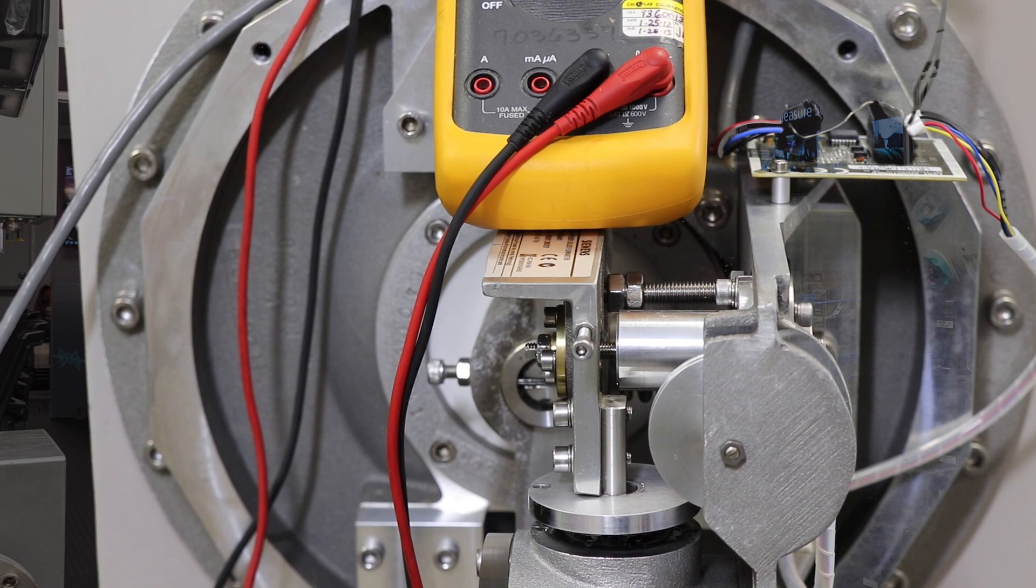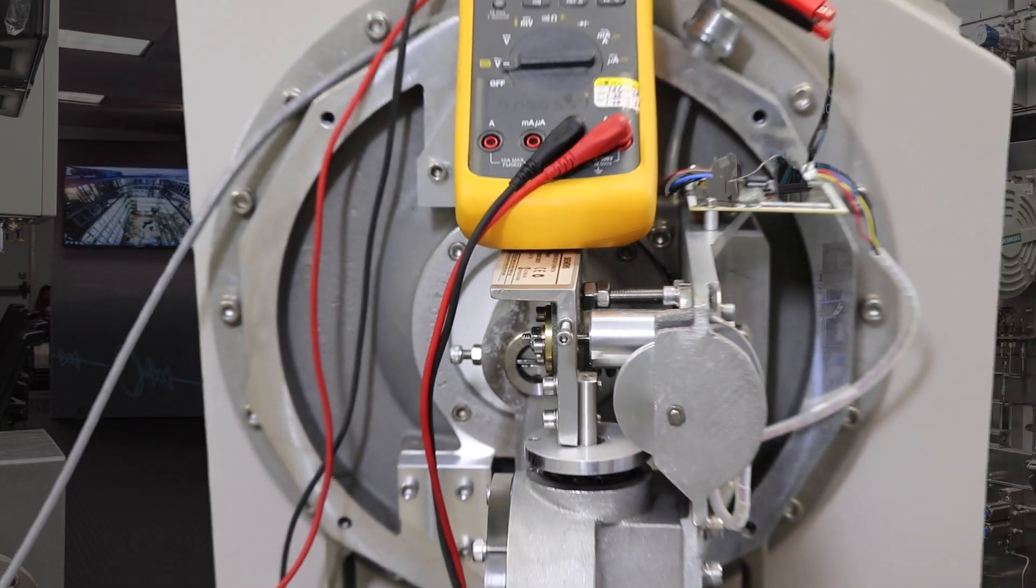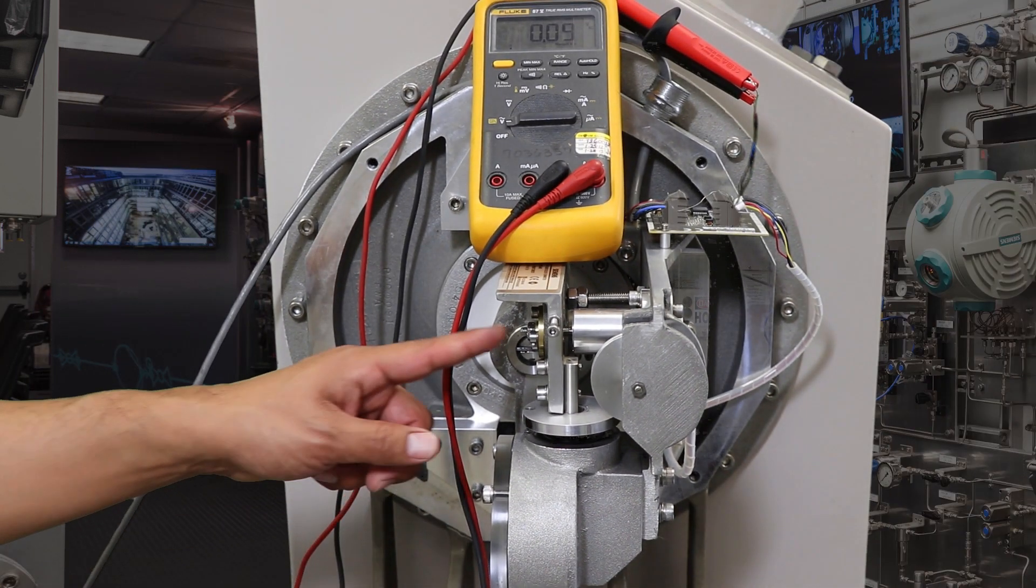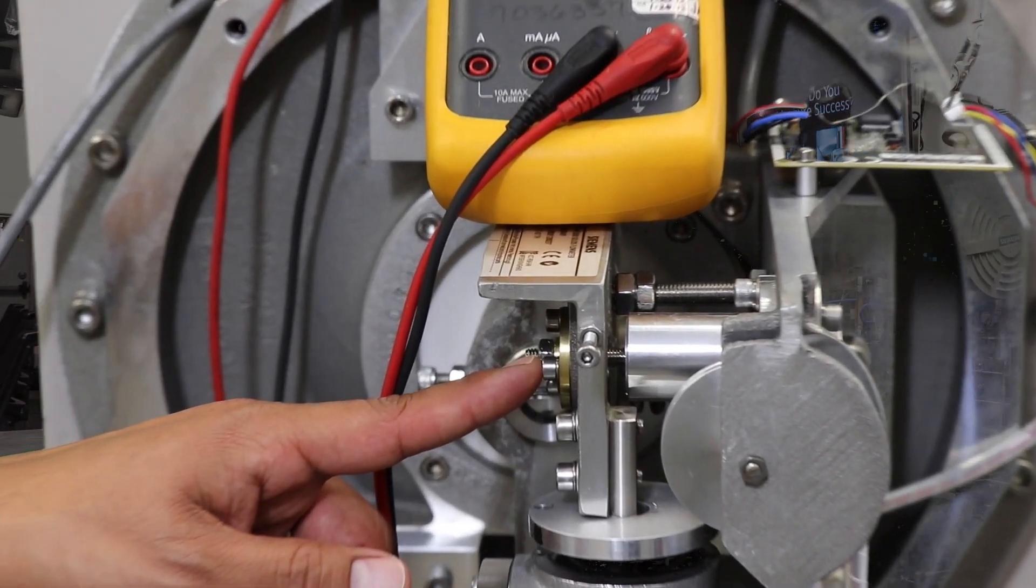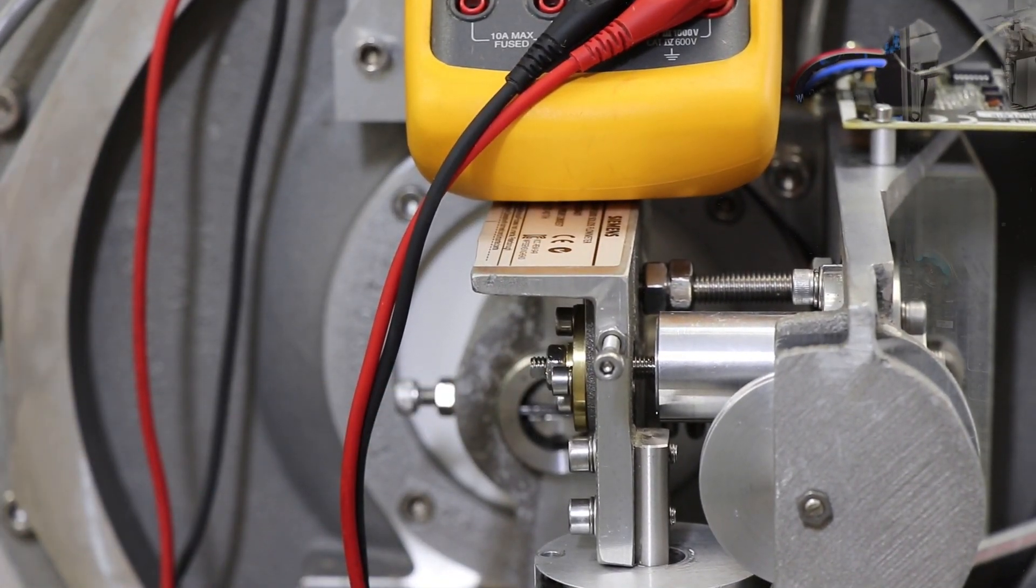After achieving the 0.1 volt, lock the nut down into its place. Be aware when you tighten down the nut that the voltage can change while you do so.